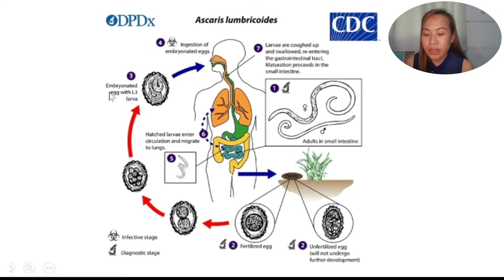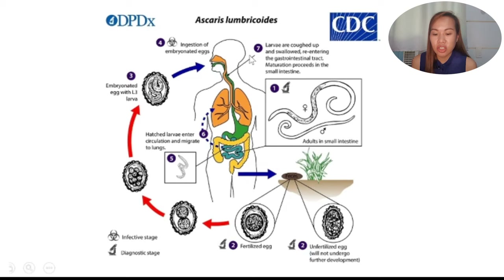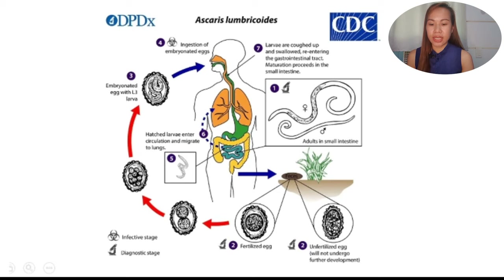The fertilized egg multiplies into an embryonated egg containing L3 larva — this becomes the infective stage upon ingestion. The hatched larva enters the circulation and migrates to the lungs. The larva is then coughed up and swallowed, re-entering the gastrointestinal tract, where maturation proceeds in the small intestine. This is the life cycle of Ascaris lumbricoides. Understanding the life cycle is essential when studying each parasite — the CDC diagrams are very helpful for this.